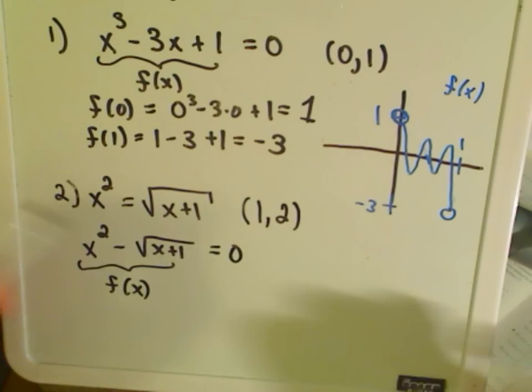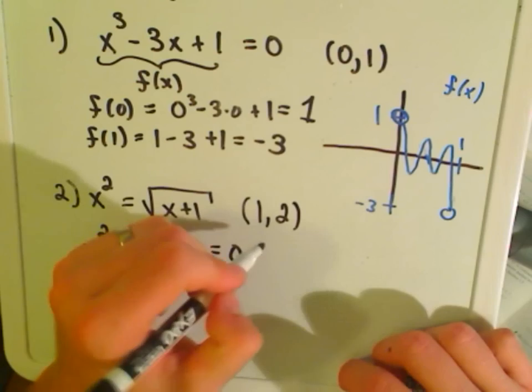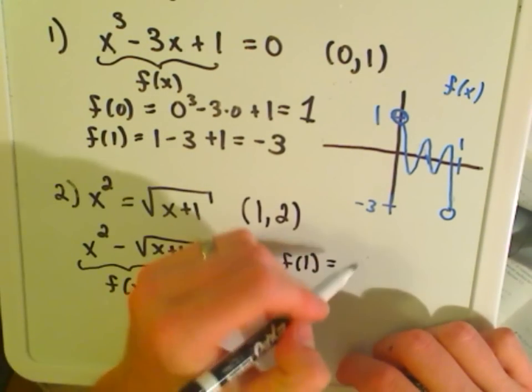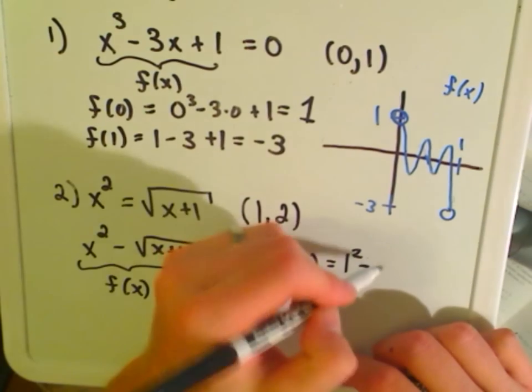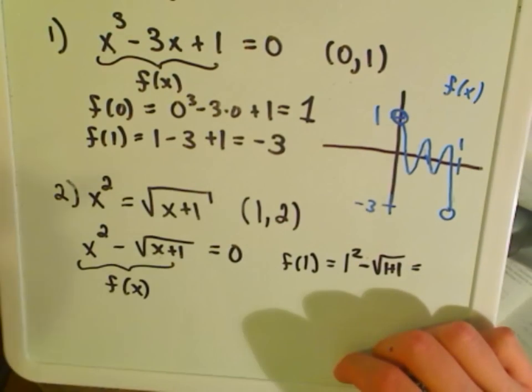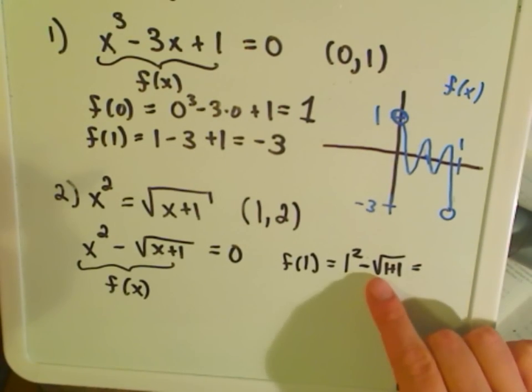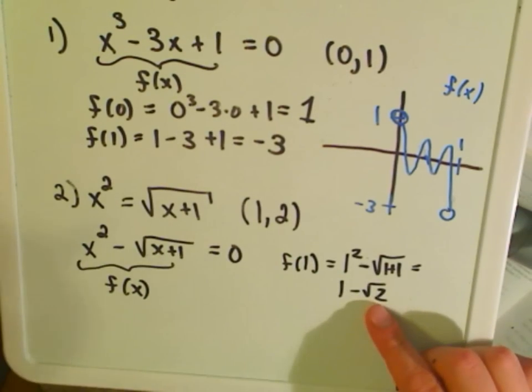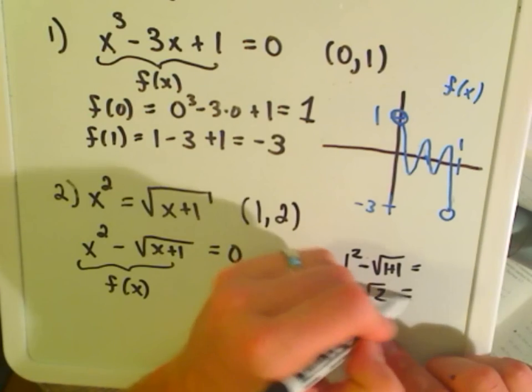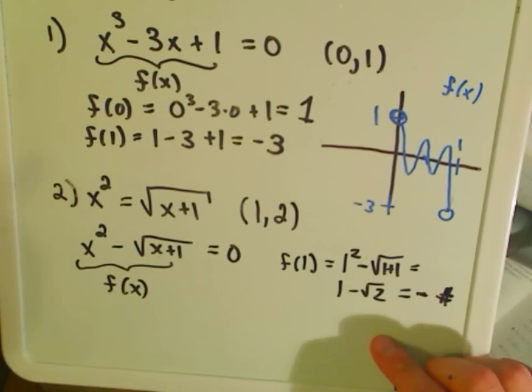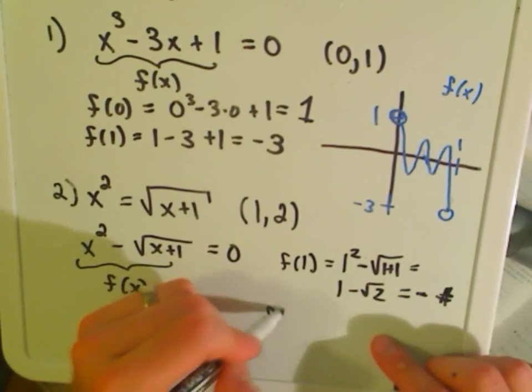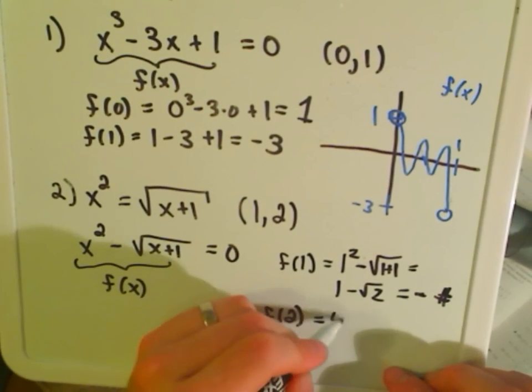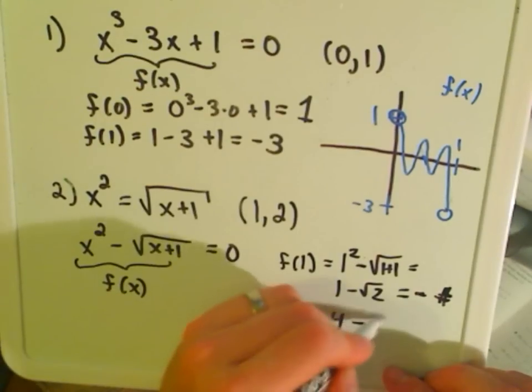But again, now if I just plug in my values, if I plug in one into the function, notice if I plug one in, I get one squared minus square root of one plus one. Okay, that's what, one minus square root of two. Square root of two is bigger than one, so this is certainly going to equal a negative number.